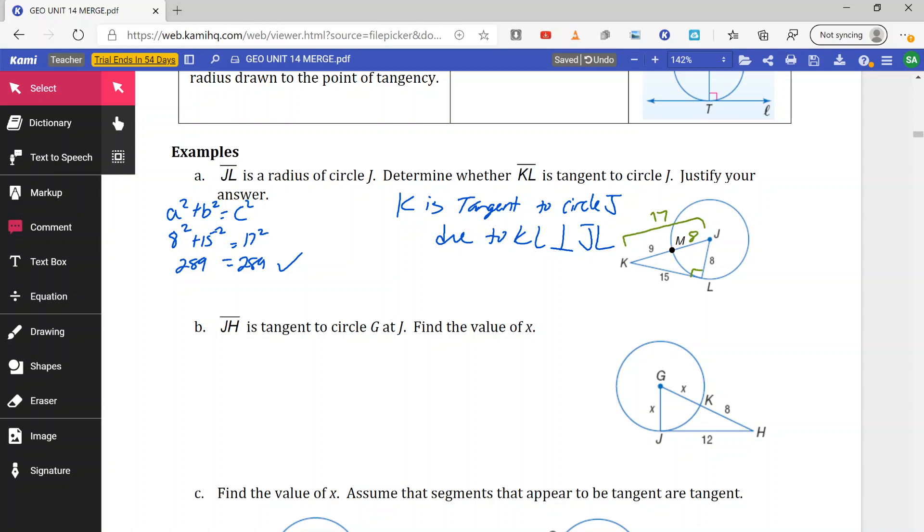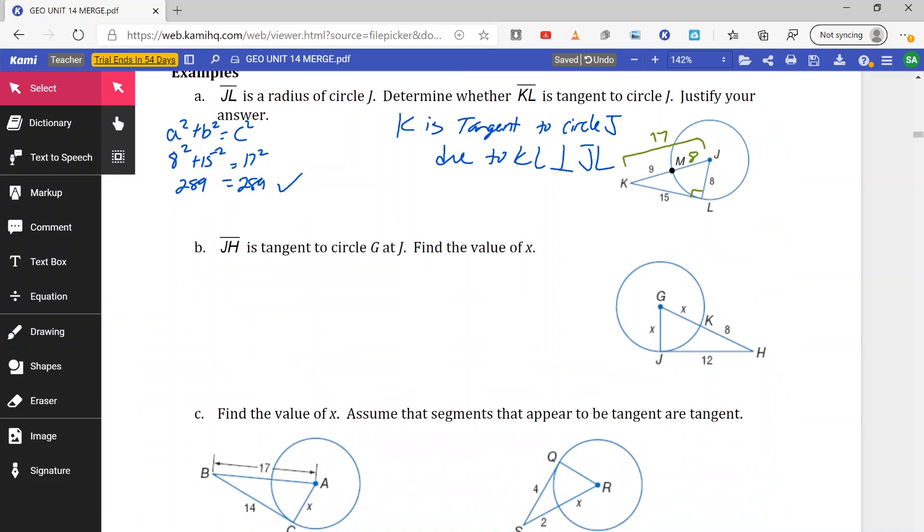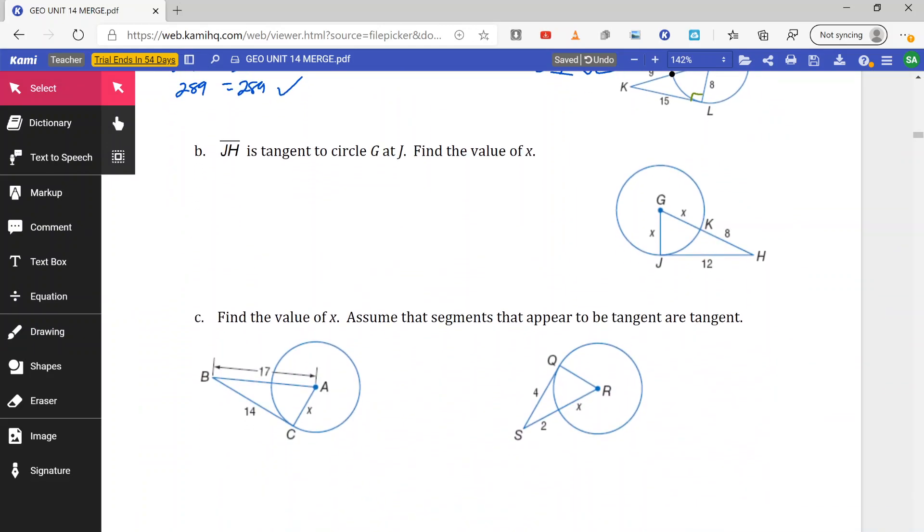And we can do the same thing with the next circle here. We have J-H is tangent to circle G at point J. Find the value of X. So here we already know that we have a tangent. Again, tangent means we have a right angle here. So that means I can use the Pythagorean theorem.